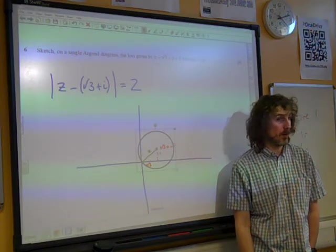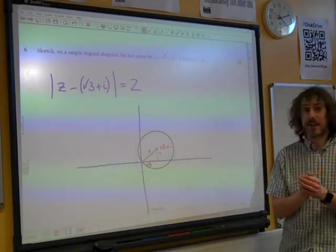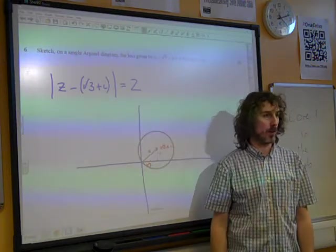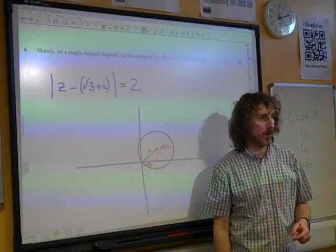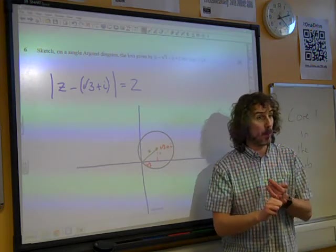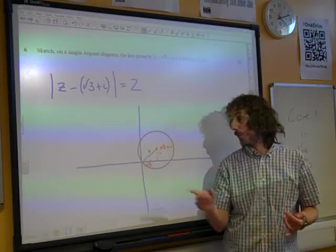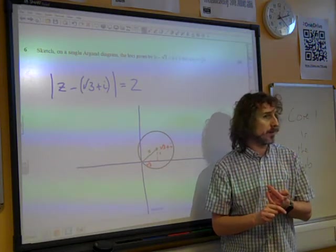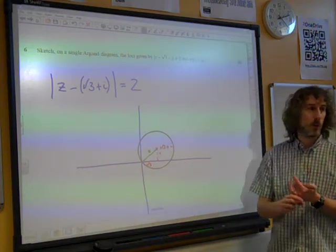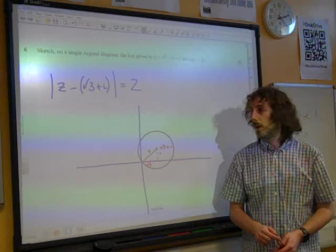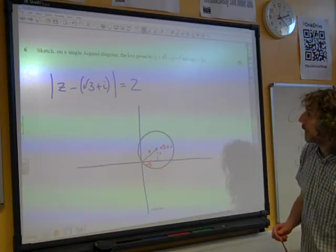So our circle has to have that centre and go through the origin. And there will be a mark for it going through the origin. Now, the reason I say we have to check this, it is so common that when you're asked to draw a circle, the circle goes through the origin, that actually it ought to be just inbuilt. It ought to be something that you always check to make sure whether the circle goes through the origin, to make sure that you draw it in the right place.